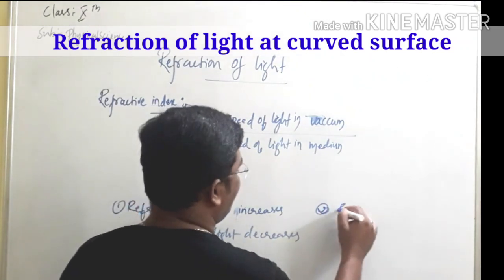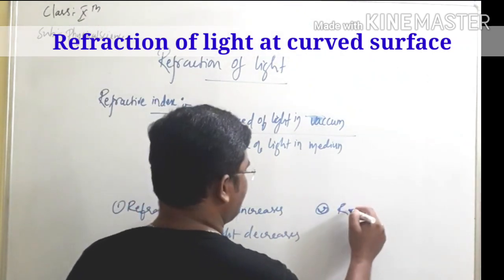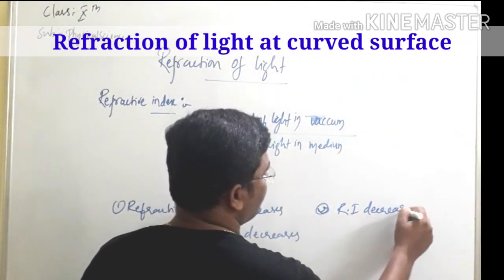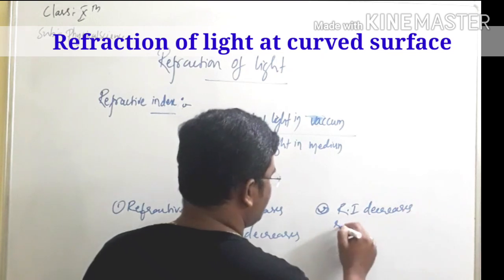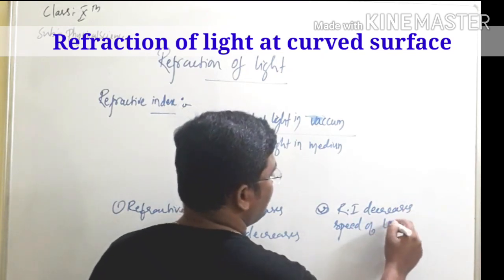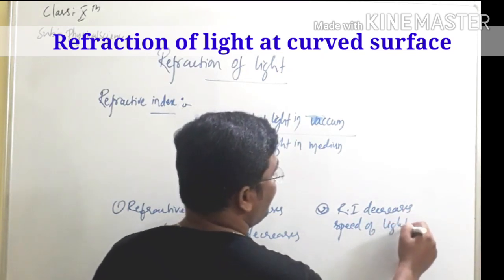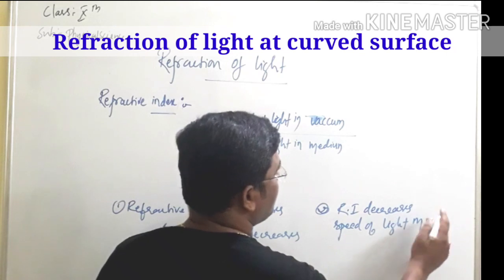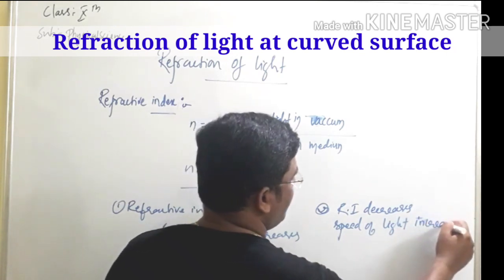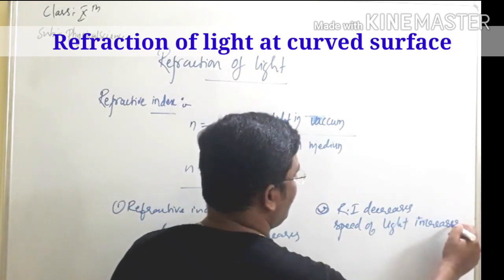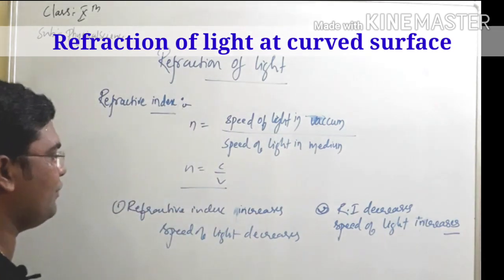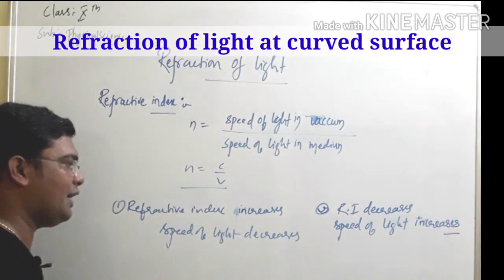If the refractive index decreases, the speed of light increases, and that medium becomes a rarer medium. If the refractive index value increases, the speed of light decreases, meaning that medium is a denser medium. Refractive index depends on two things: the nature of the material and the wavelength of light.